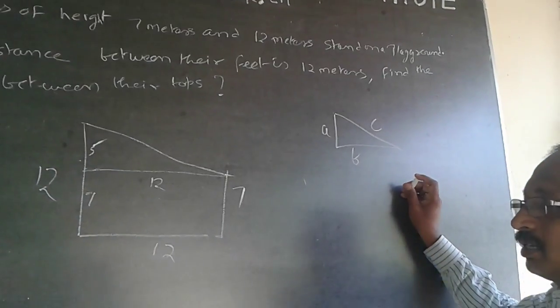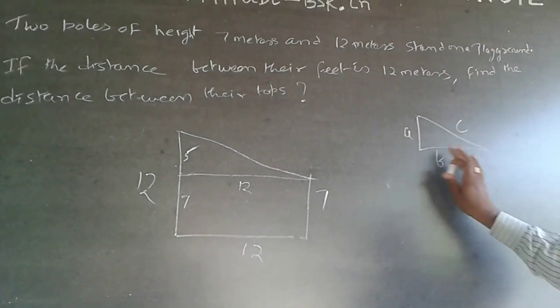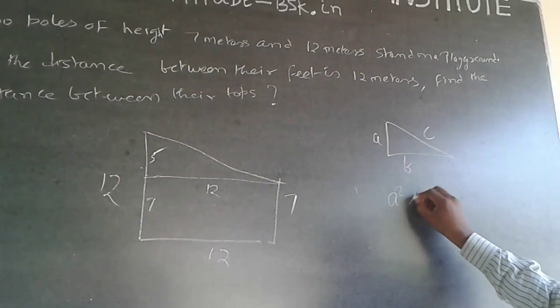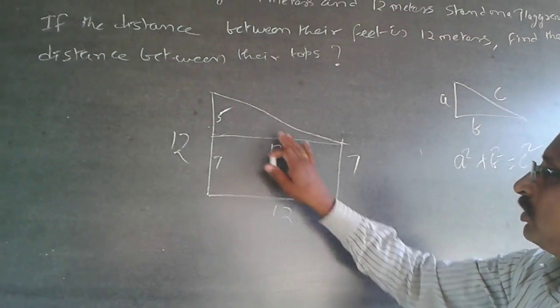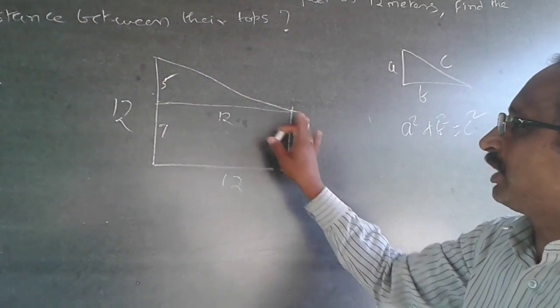In a right angle triangle, this is a, this is b, this is c. The Pythagoras theorem is a square plus b square will be equal to c square. The same rule is applicable here.